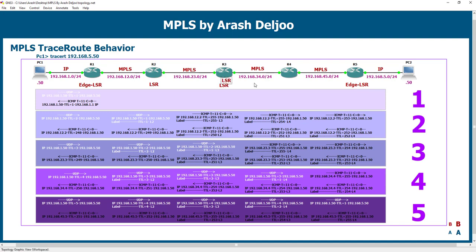Now we want to understand what is happening when you type traceroute. In Cisco routers, traceroute sends a UDP packet to an unused port with a TTL of one, then increments the TTL after the first packet's response is received, again and again, until the response from the destination is received and we can discover the path.